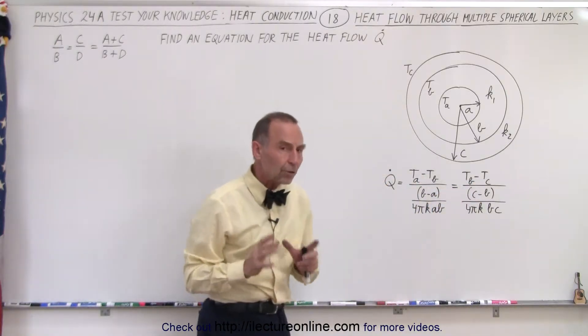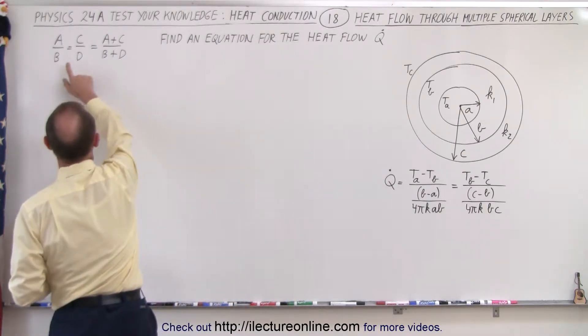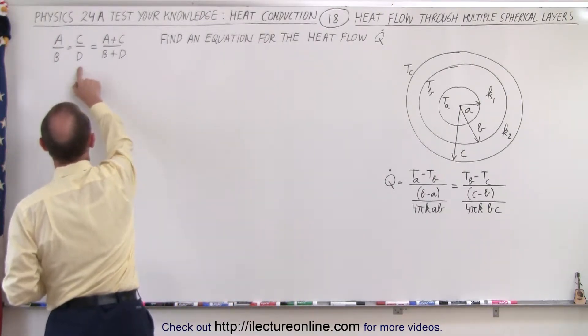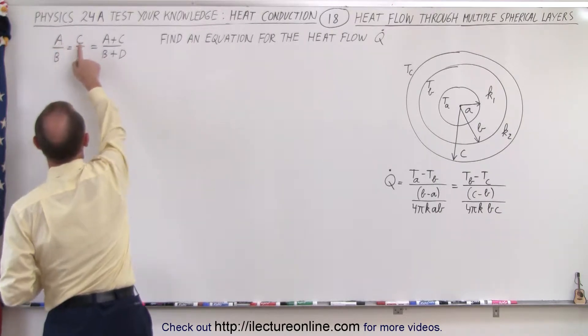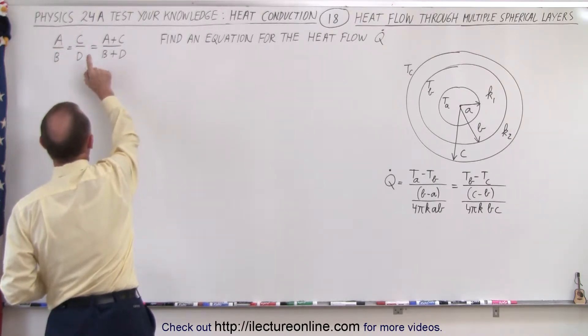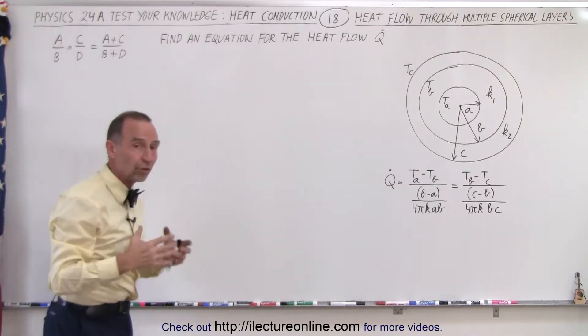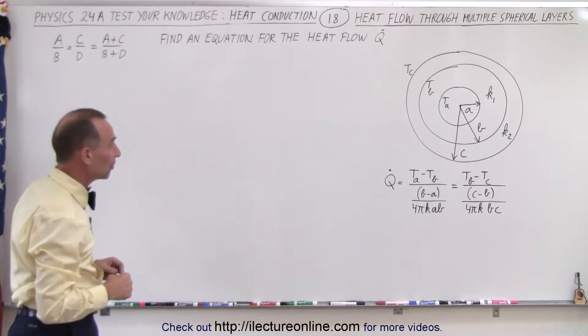So we're going to now use the principle that if we have two equations or two fractions set equal to each other, we can then add the numerators together, we can add the denominators together, and that will then also be equal to the sum of the numerators divided by the sum of the denominators.